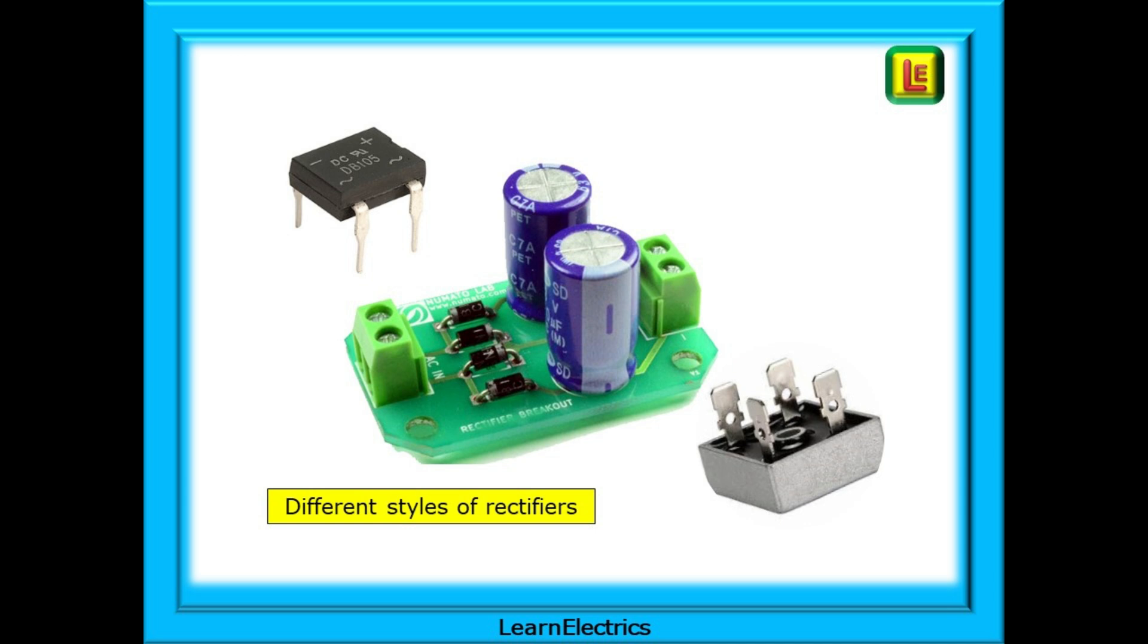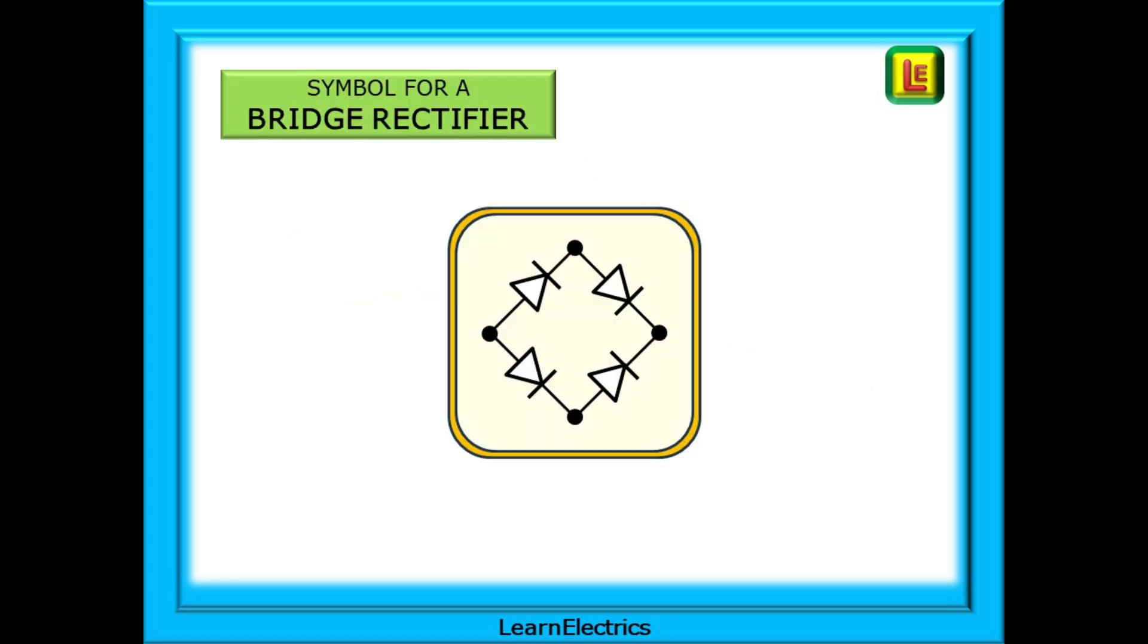Shown here are three different styles of bridge rectifier and there are many more available. This is the standard symbol for a bridge rectifier, the component that converts AC into DC, that is to say alternating current into direct current. And it does matter where the relevant wiring connections are made.